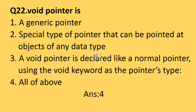Question number twenty-two: what is a void pointer? The answer is all of the above. A void pointer is also called a generic pointer. It is a special pointer type that can point to any type of object. A void pointer is declared like a normal pointer — you write the void keyword, a star (*), and the pointer variable name. However, a void pointer does not know what type of object it is pointing to, so if a programmer wants to use it, they must explicitly convert (cast) it to another pointer type first.